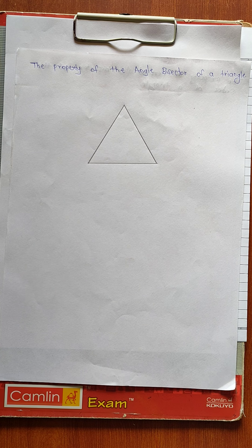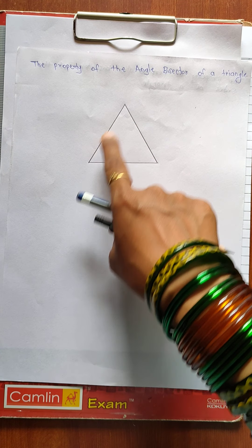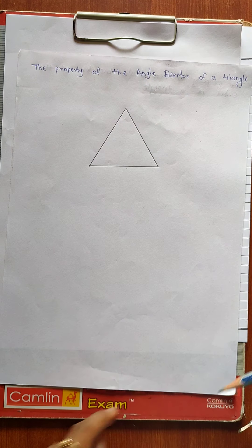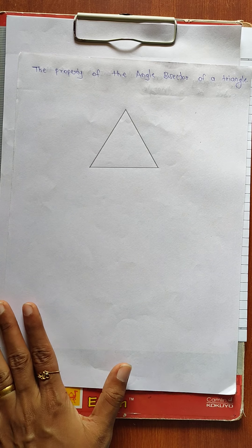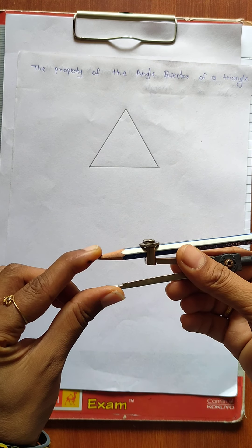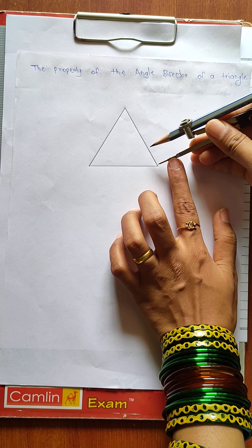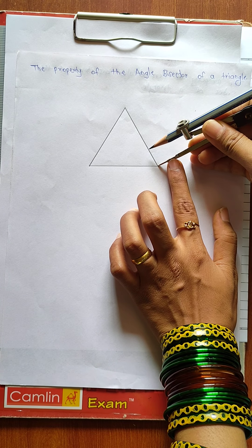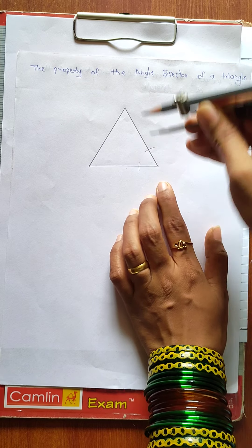How many angles does a triangle have? A triangle has three angles — this is the first one, second one, and the third one. Let's draw the angle bisectors. To draw an angle bisector, we need a compass. First, we will mark the arcs for all three angles.